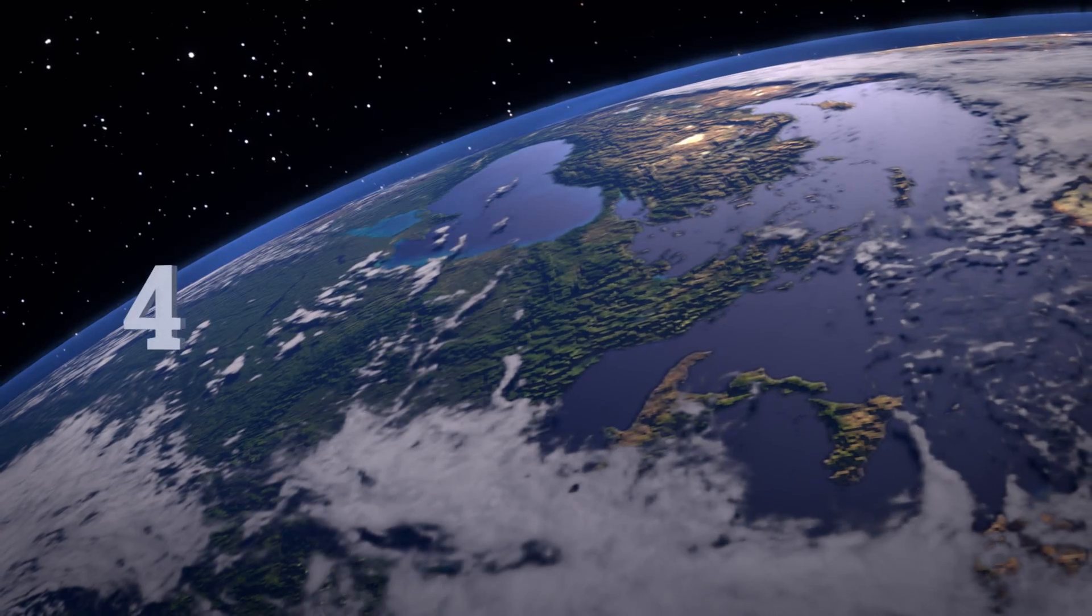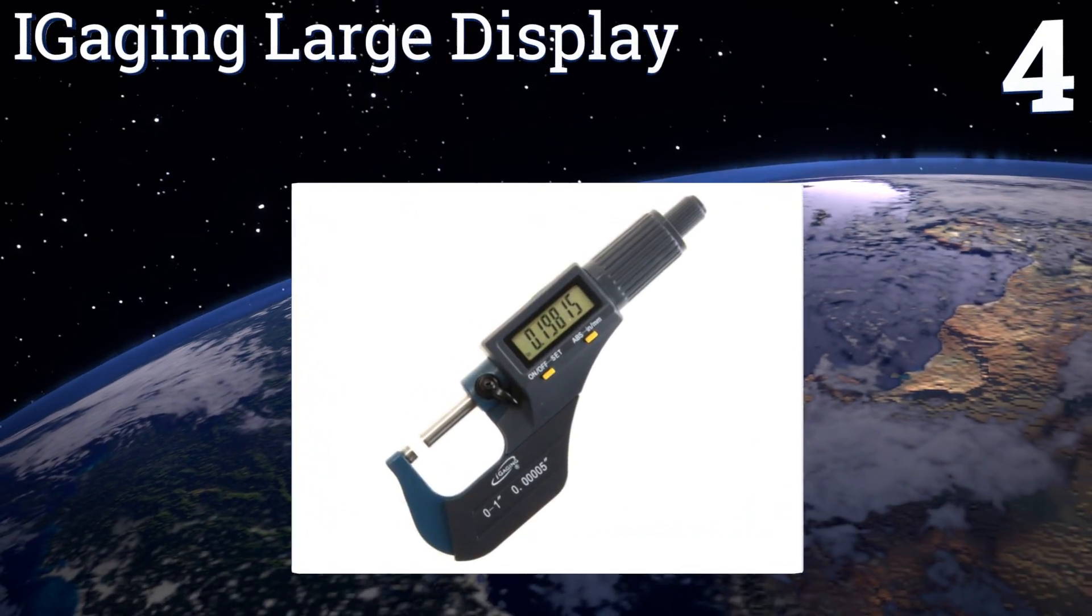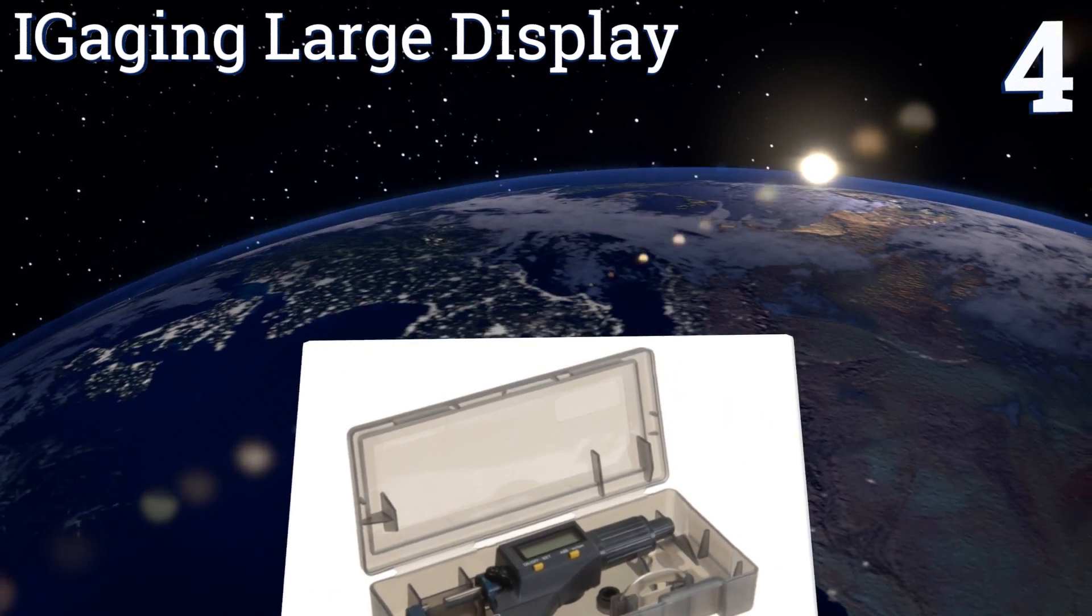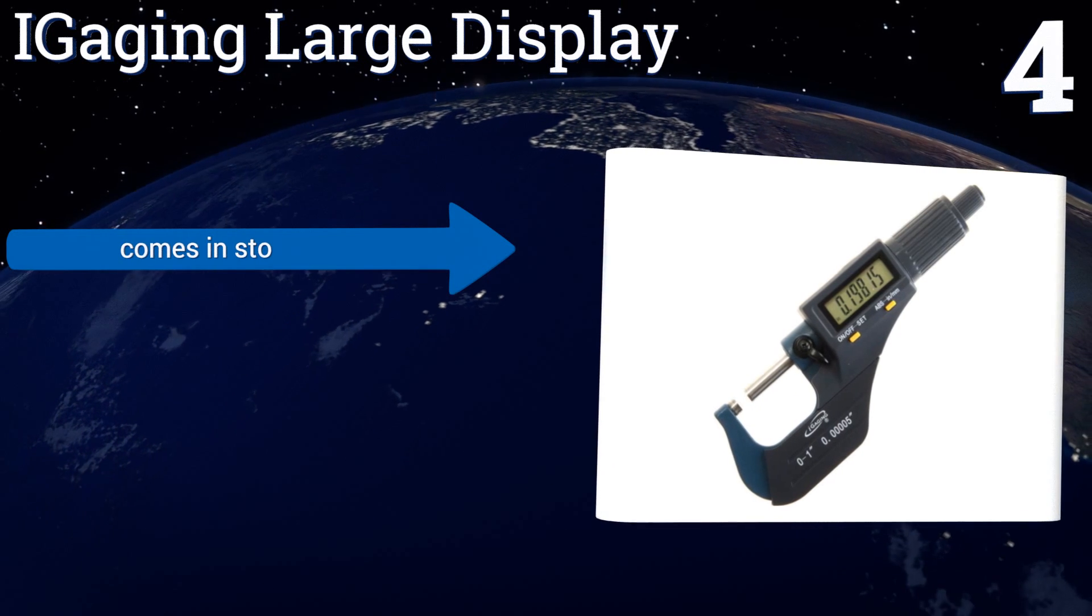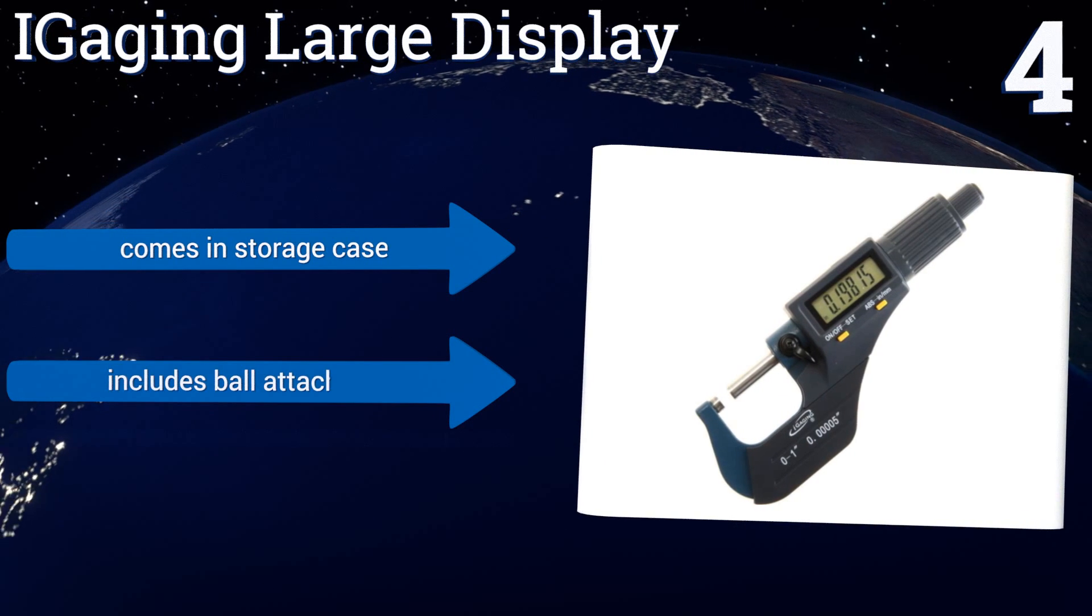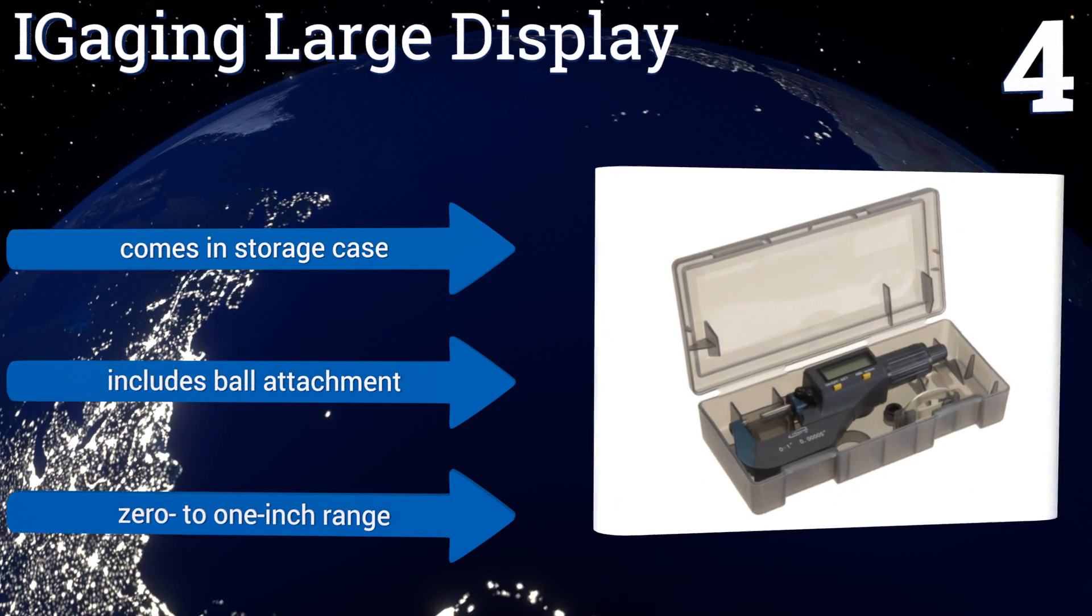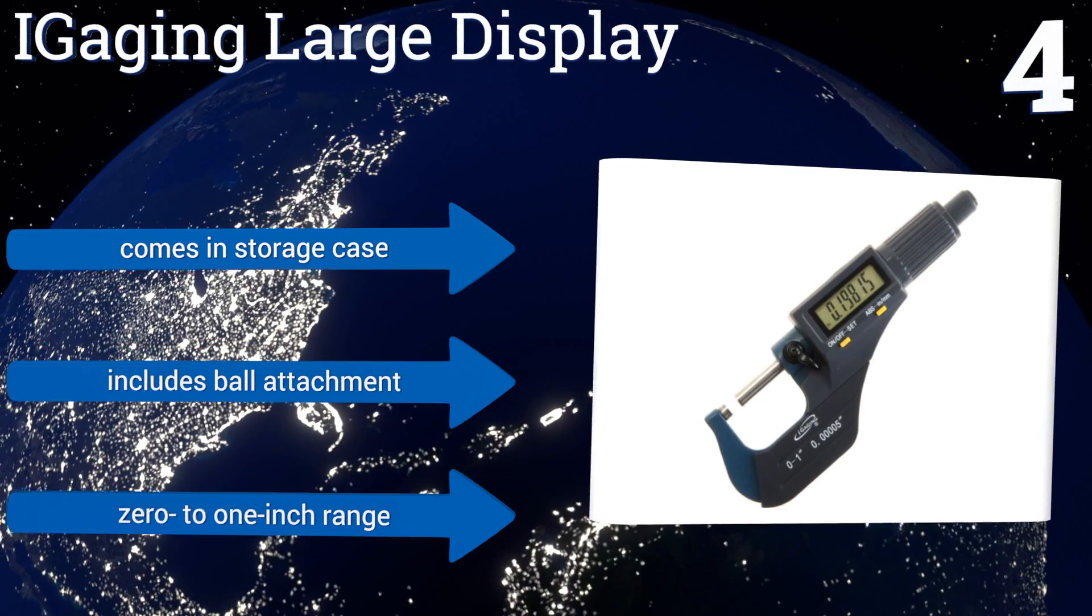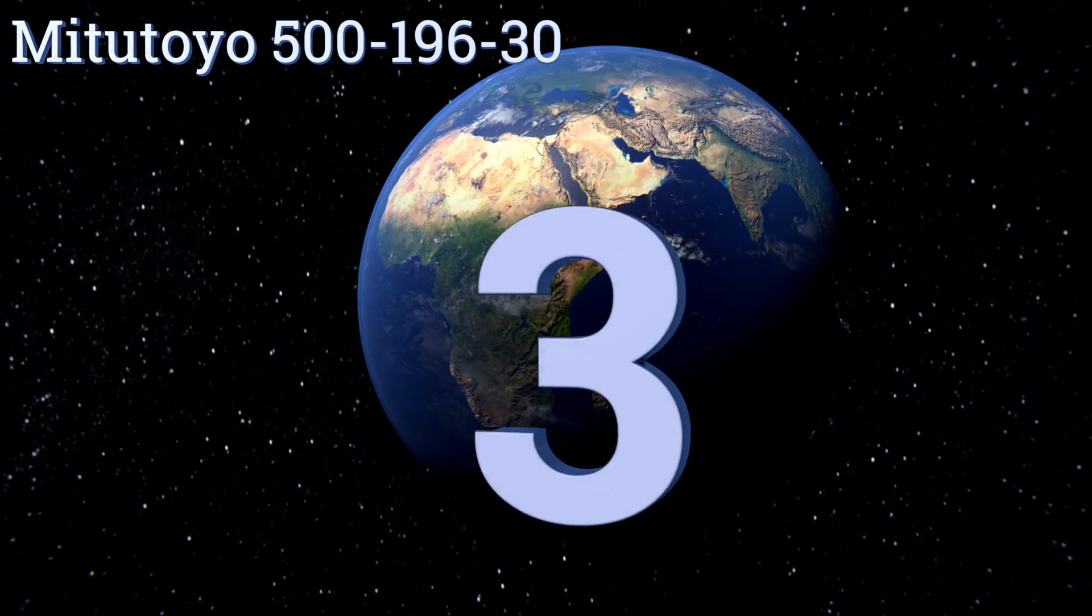At number four, perfect for the hobbyist machinist on a budget, the iGauging Large Display is a popular and easy to read way to measure very small items. Connect the device to a computer's USB port via an SPC cable, which is not included, to input dimensions directly into your favorite design program. It comes in a storage case with a ball attachment and a zero to one inch range.